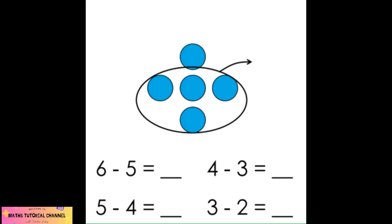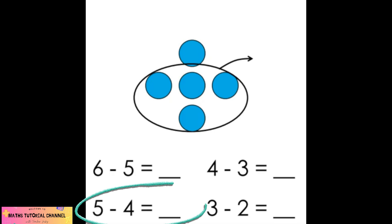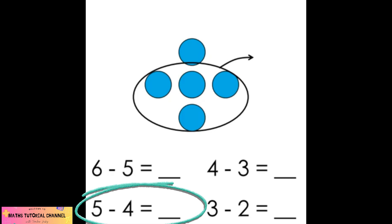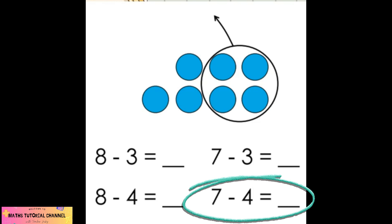How about this one? What is the correct equation? The correct answer is five minus four. Let's count all the blue balls: one, two, three, four, five. The total number of blue balls is five, and four are being taken away. That's why this is the correct equation. Five minus four is equal to one. Great job! How about this one? What is the correct equation? It's seven minus four. Great job!